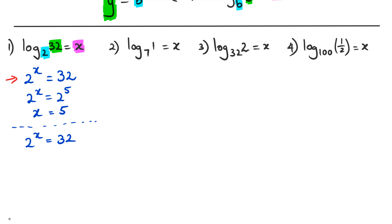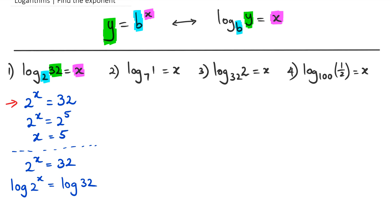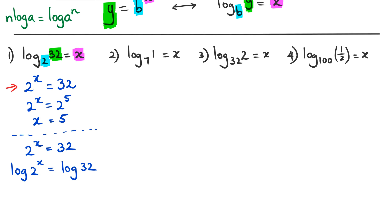This is why using logs becomes really useful. I'm going to take logs of both sides, giving log(2^x) equals log(32). Remember the logarithm rule: if you have n·log(a), this can be written as log(a^n). Using that rule, I can bring x in front of log 2, giving x·log(2).